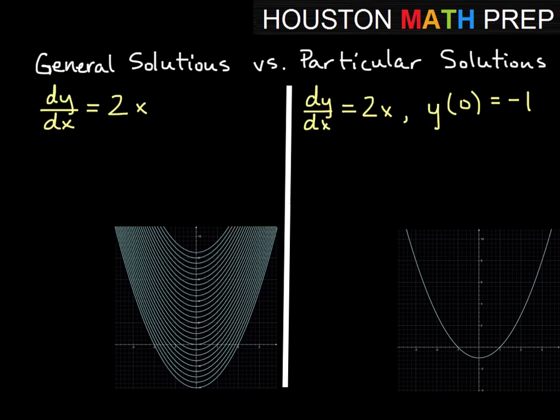Actually, there are many of them. If we think about integrating this or taking the antiderivative, any function of the form y equals x squared plus a constant will give us a derivative of 2x, because when we take the derivative of that constant, that becomes 0. I've graphed several of these. You can see these parabolic shapes of equations. Basically, any of those have a derivative of 2x.